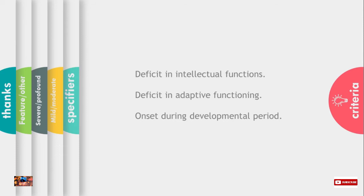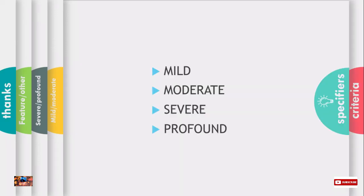If these three criteria are met by an individual, that person is suffering from intellectual disability. Now we talk about specifiers, which include mild intellectual disability, moderate intellectual disability, severe intellectual disability, and profound intellectual disability.